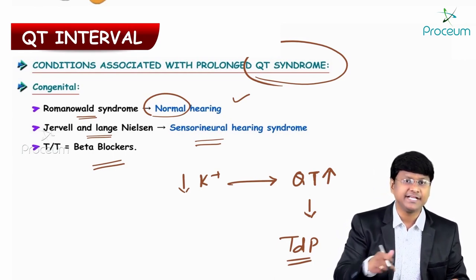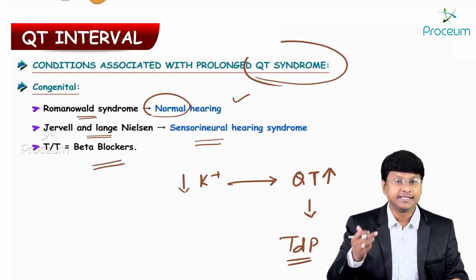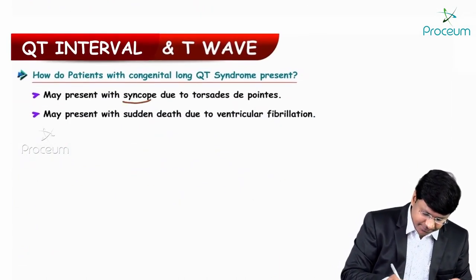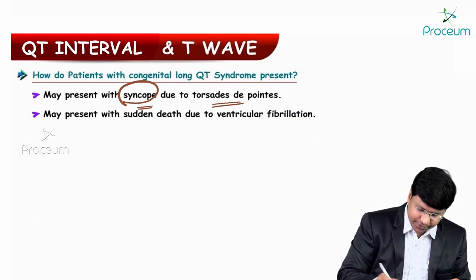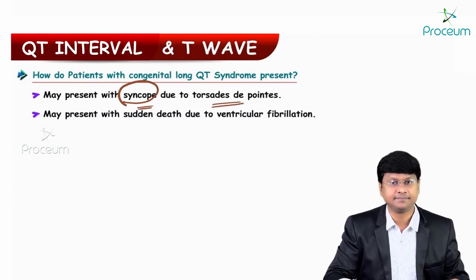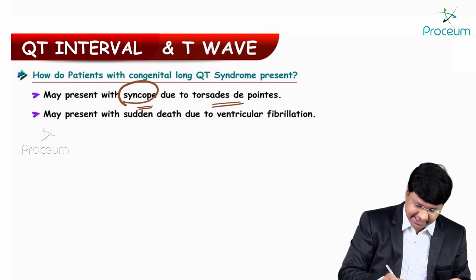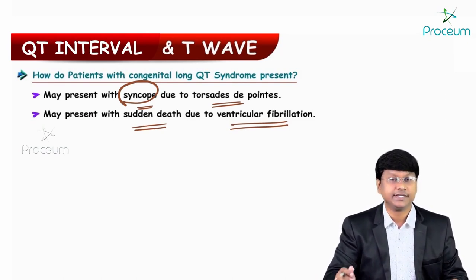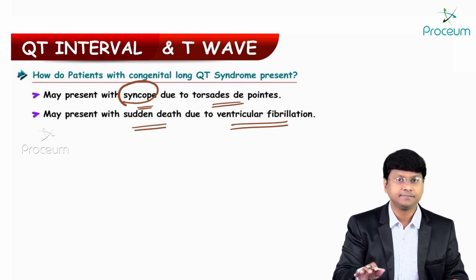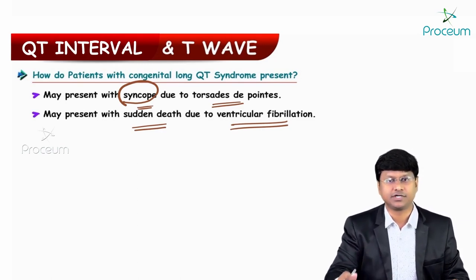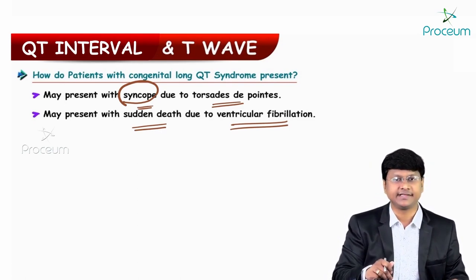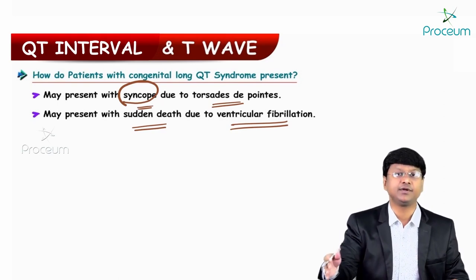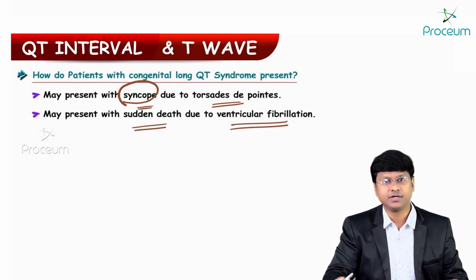What will be the presentation of patients with congenital long QT syndrome? The presentation will be in the form of a syncopal attack due to torsades de pointes. These individuals may also present with sudden death due to ventricular fibrillation — they may degenerate into ventricular fibrillation where the individual develops sudden cardiac death.